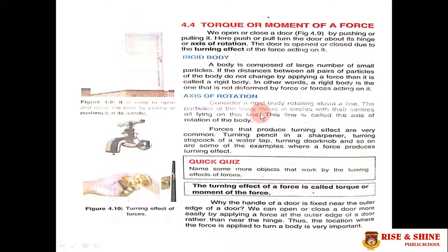We also see that we have two doors that we open and close, fixed at their ends around which the door rotates. The line or point around which the body rotates is called the axis of rotation. Forces that produce turning effects are very common — turning a pencil in a sharpener, turning the stop cock of a water tap as seen in this picture, turning a door knob, and so on.